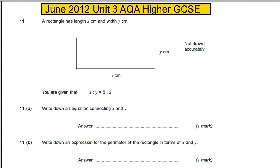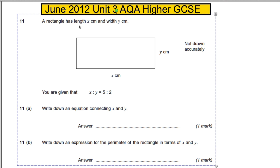Question 11 is about area, perimeter, and ratio. This question was poorly done in the exam because of confusion with ratio. I want to show you that you don't have to be overly confused — just think very clearly and use the information around you, and you can get these sorts of questions.